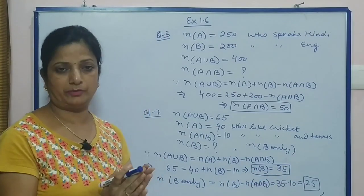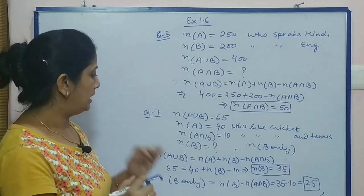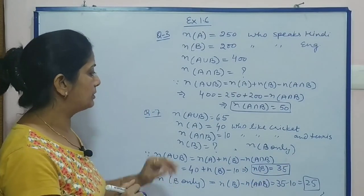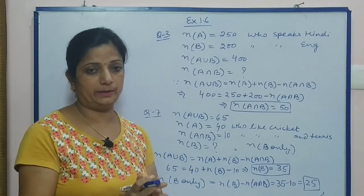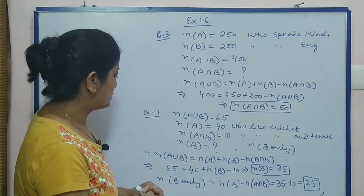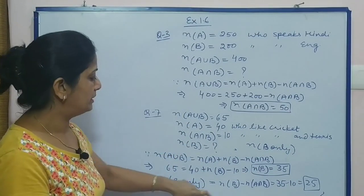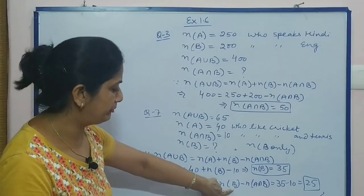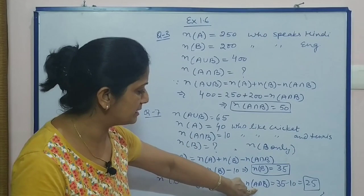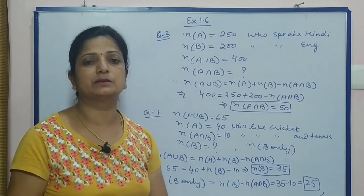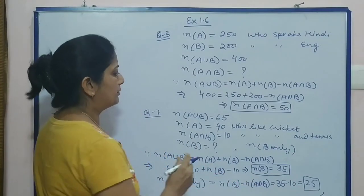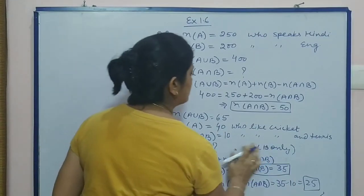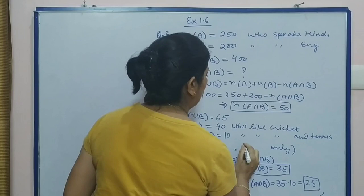Now we calculate B only. Number of B only means number of B minus number of A intersection B — that gives us those who like only the second sport, which is 35 minus 10 equals 25.